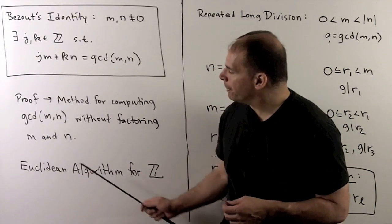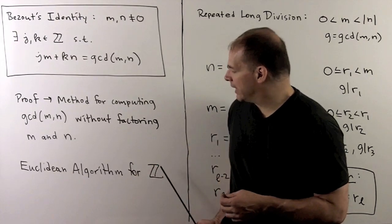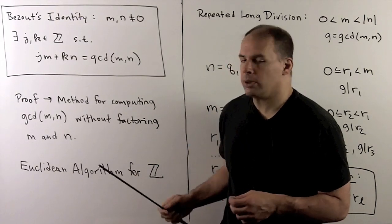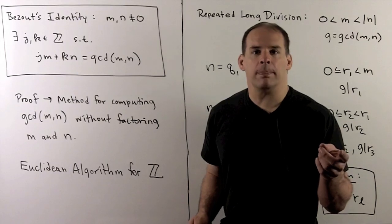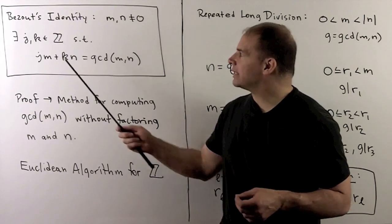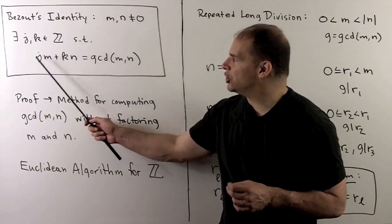Now, this method we're going to call the Euclidean algorithm for the integers. Once we have the Euclidean algorithm, we can take another look at Bézout's identity, and that'll give us a way to find the j and the k.